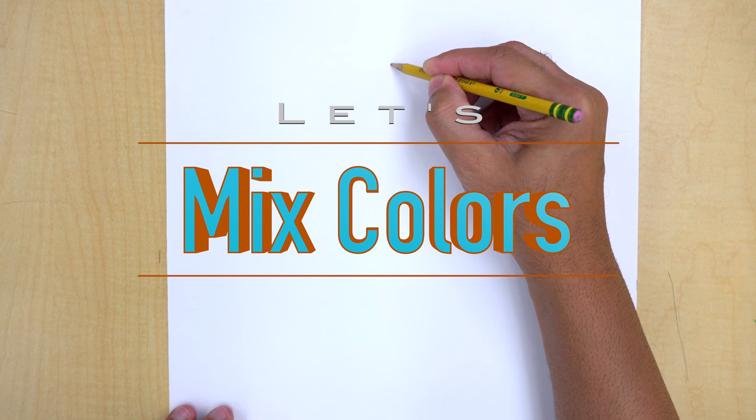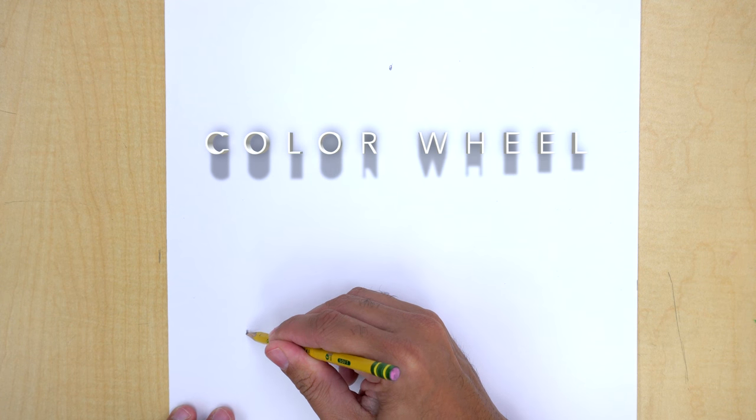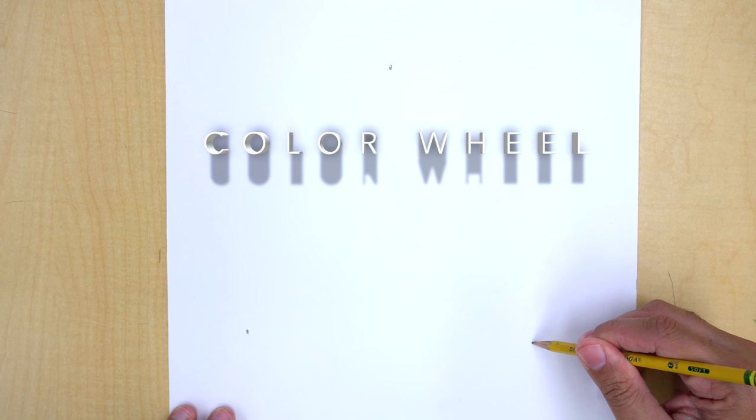Let's mix colors. First we need something to paint on, so let's draw a color wheel. That's simple. I'm going to make a triangle. So I'm just putting the dots for reference.